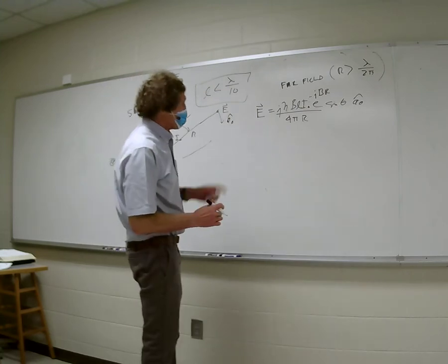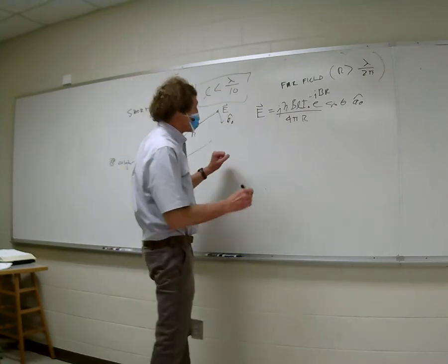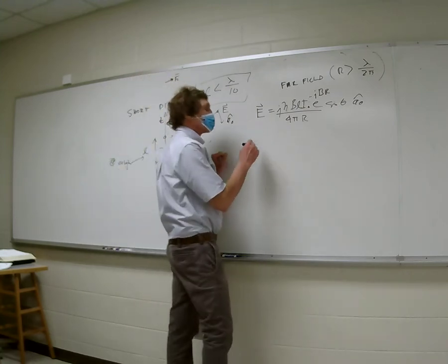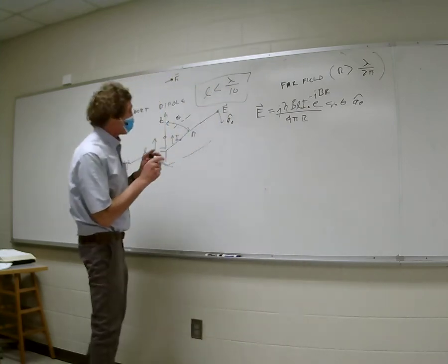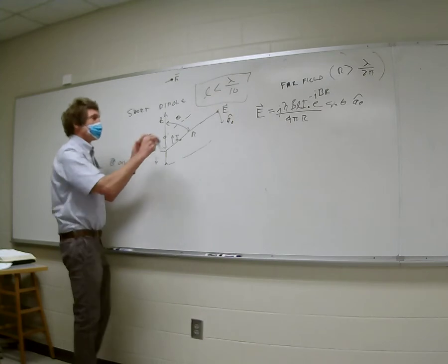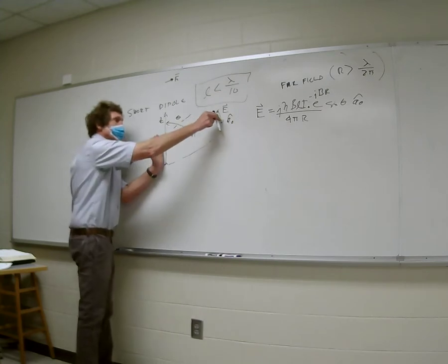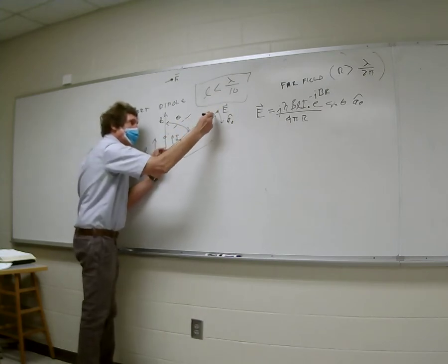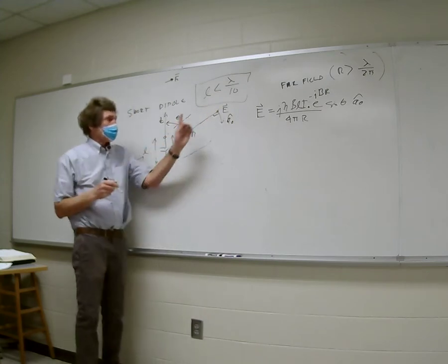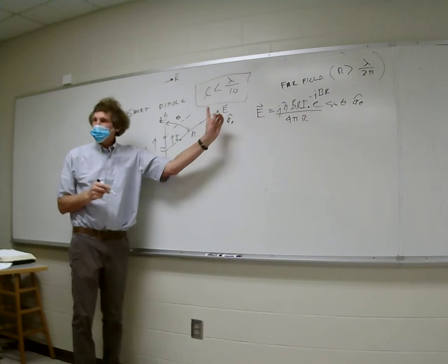That's the E field — and remember, the E field is in the A_theta direction. If that's the radius vector R, the E field and R are always 90 degrees apart for a propagating wave. You can replace η and β by μ₀·ω.